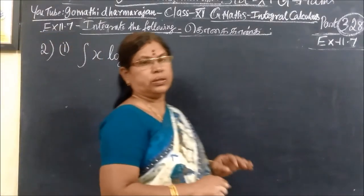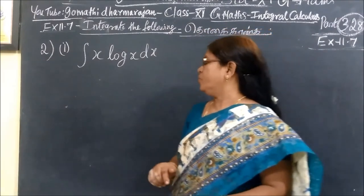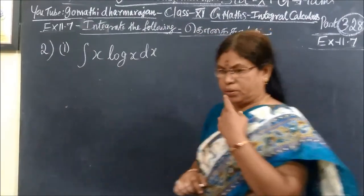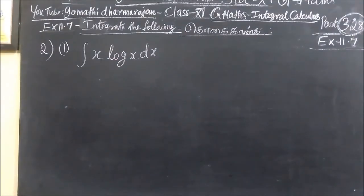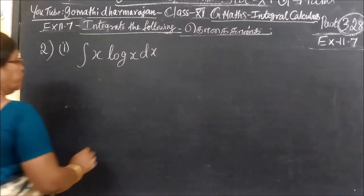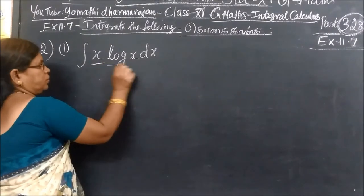So now question number 2, exercise 11.7. Page 328, so 328 is correct. And here are two types.